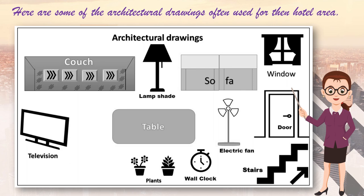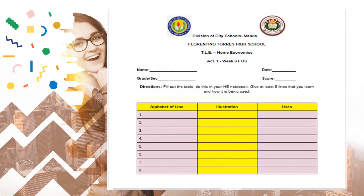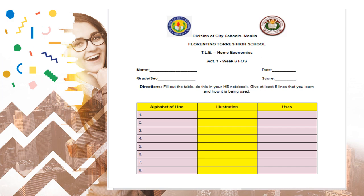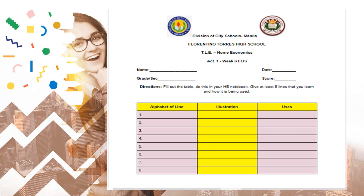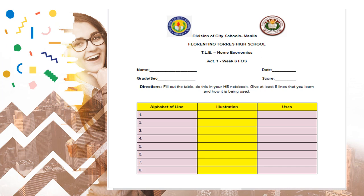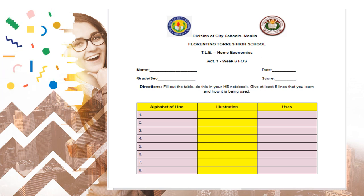That's all for Lesson 6. I hope you learned something about interpreting design and layout. For your activity — Activity 1, Week 6 — fill out the table in your HE notebook. Give at least 5 lines that you have learned and how each is used. The first column is for the alphabet of lines, the second column is for the illustration or drawing, and the third column is for the uses of each alphabet of lines.